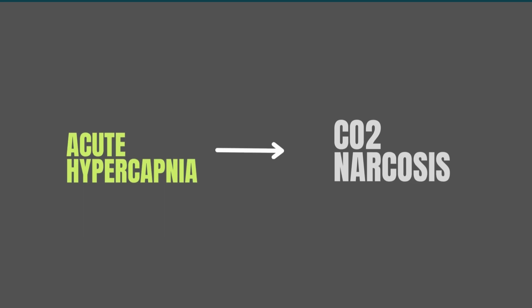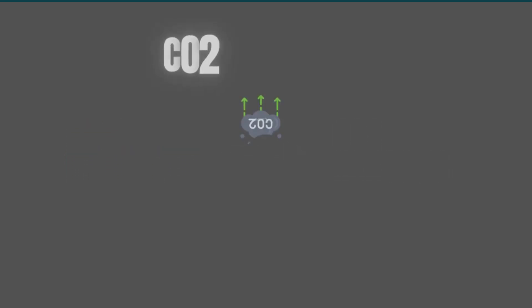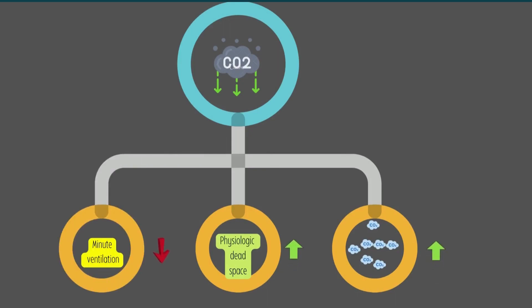Let's understand the etiology of CO2 narcosis, or causes in detail. Although the etiology is complex, it's useful to categorize the potential causes into three categories. Decreased minute ventilation, increased physiologic dead space, and increased carbon dioxide production.